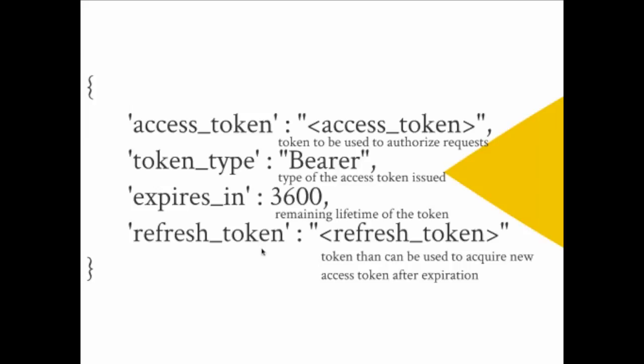What comes back when successful is the access token — this is the valet key. It is time-limited, expiring in one hour, and has a token type. You also receive a refresh token, which has a different purpose: after the access token expires, you can trade in the refresh token for a new access token. As an application sitting in the middle, you want continued API access over time, so you use the refresh token to get new access tokens as needed.